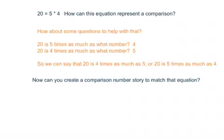All right, so how about this one? 20 = 5 × 4. How can this equation represent a comparison? Let's think through some things to try and help us with that. We could say 20 is five times as much as what number? That'd be 4. Or we could say 20 is four times as much as what number? And that would be 5. So we can say that 20 is four times as much as 5, or 20 is five times as much as 4.